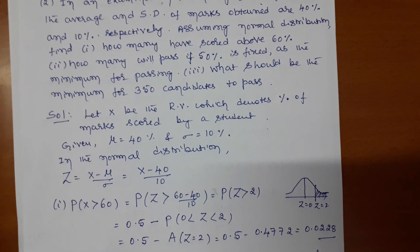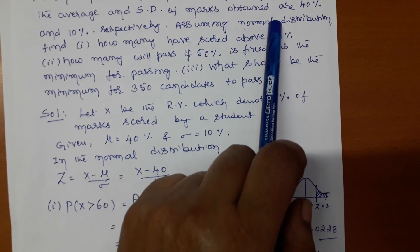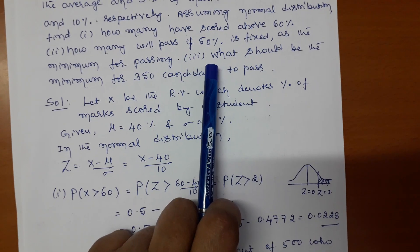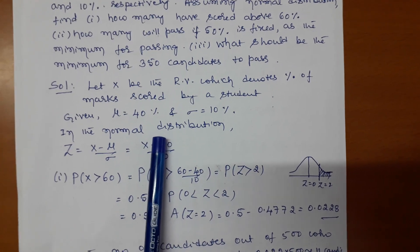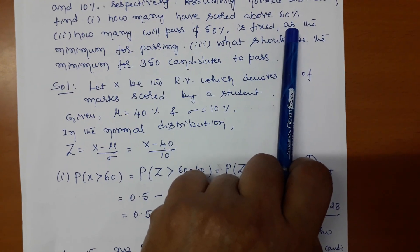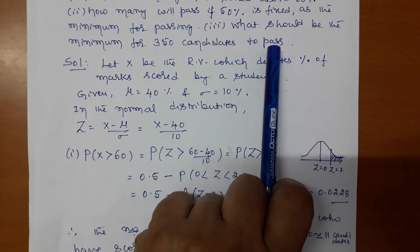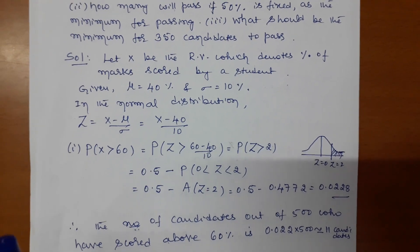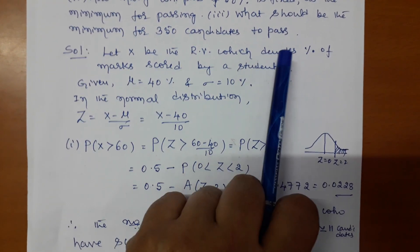They have assumed a normal distribution. One important thing to observe: the mean and standard deviation are given in terms of percentage, and the questions are also asking in percentage. So it is not necessary to convert the mean and standard deviation to decimal form — leave them in terms of percentage. Before converting to decimal, observe carefully: they are asking in terms of percentage.